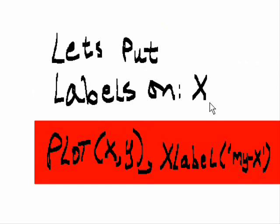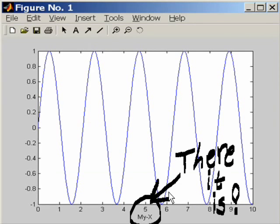Let's put labels on the x-axis. Plot, xlabel, single quote, My-X, single quote, closed. And I hit enter. Here's my output. And there it is. My-X.